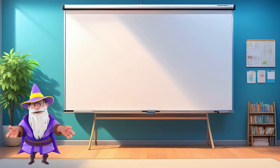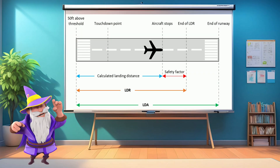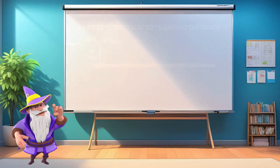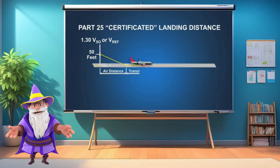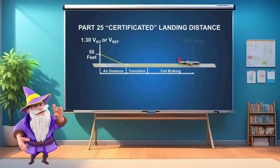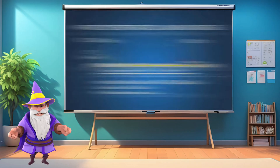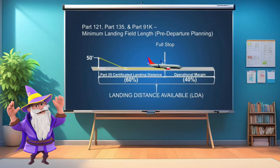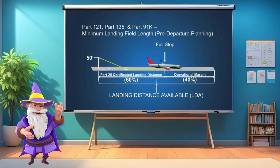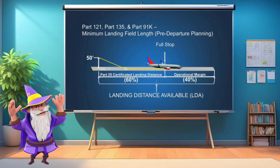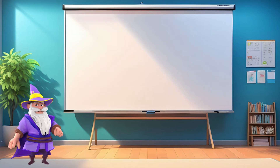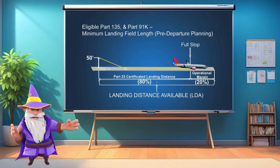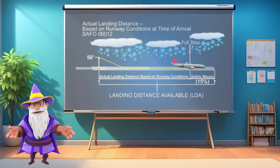Now let's see if we can land. Landing distance required is the total distance an aircraft needs to land safely. It starts at the point where the aircraft reaches 50 feet above the runway and includes the full rollout until it comes to a full stop. For flight planning purposes, the landing distance required must be a maximum of 60% of the landing distance available, for both the planned destination airport and the alternate airport.